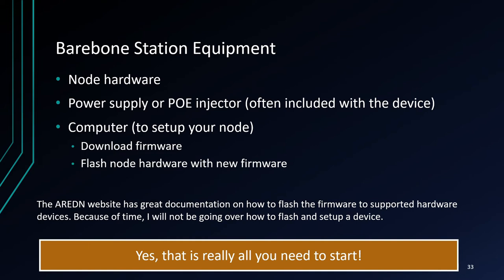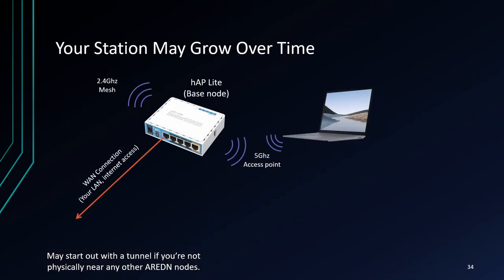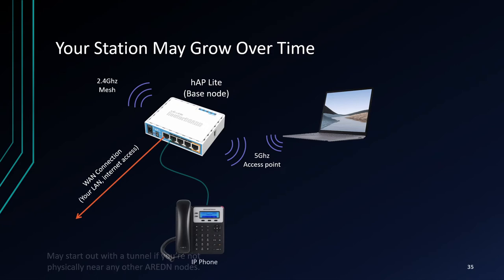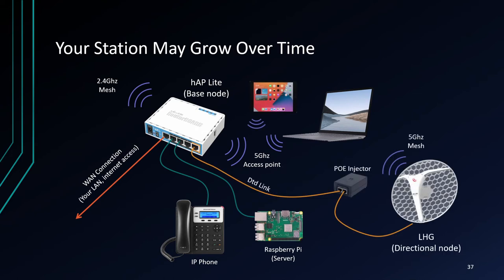Because of time, I won't be able to go over how to actually flash the ARDEN software onto a node or how to set up the initial settings; however, you can find great documentation on that process at ardenmesh.org. Remember, just like any other amateur radio station, your mesh station will probably start out small — you may start out with only one node in your home or shack. As you explore, you may want to connect devices to your node like an IP phone or a Raspberry Pi. Eventually your home setup may include other nodes to provide directional links and other connectivity. It's really up to you to decide what your ideal mesh setup looks like.